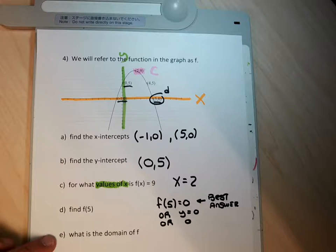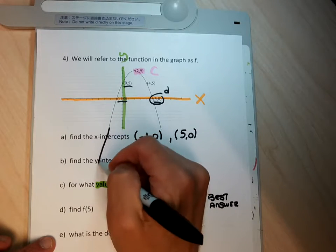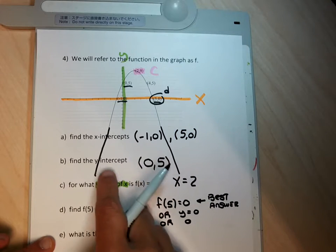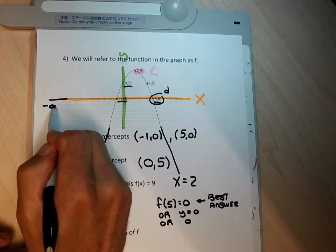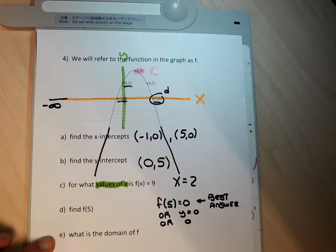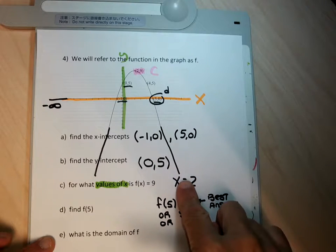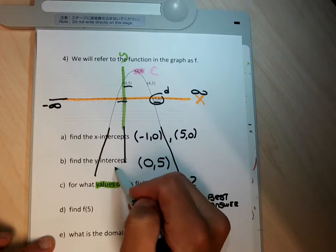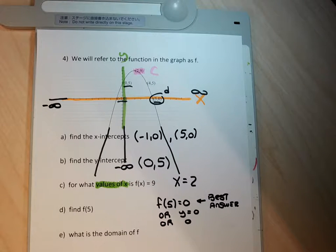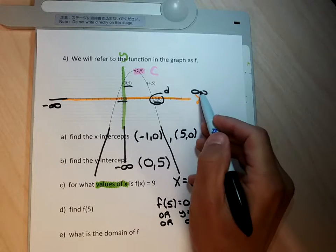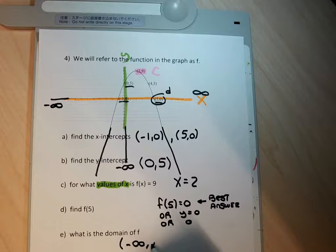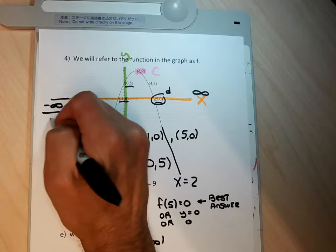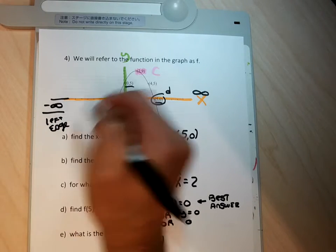For part E of number 4, because the endpoints aren't labeled, I have to extend the graph down and to the right and down and to the left. As I go in either direction, the graph eventually gets all the way to the far left edge, which is negative infinity in the x direction, and going the other way, eventually to the far right edge of the x-axis. In terms of the domain, I read the left edge to the right edge of the extended graph. The domain is going to be negative infinity to positive 5, because this is the left edge and this is the right edge.